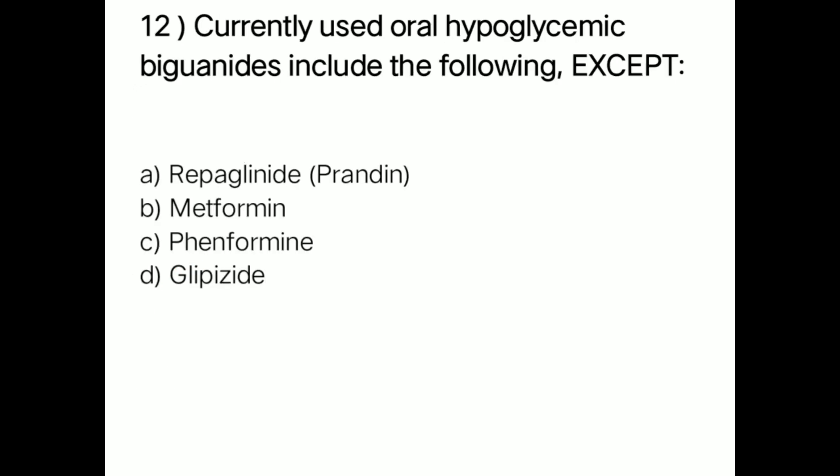Next question: currently used oral hypoglycemic biguanides include the following except — option A: repaglinide (randine); option B: metformin; option C: phenformin; option D: glybenclamide. Right answer is option D — glybenclamide, as it is a sulfonylurea, not a biguanide.